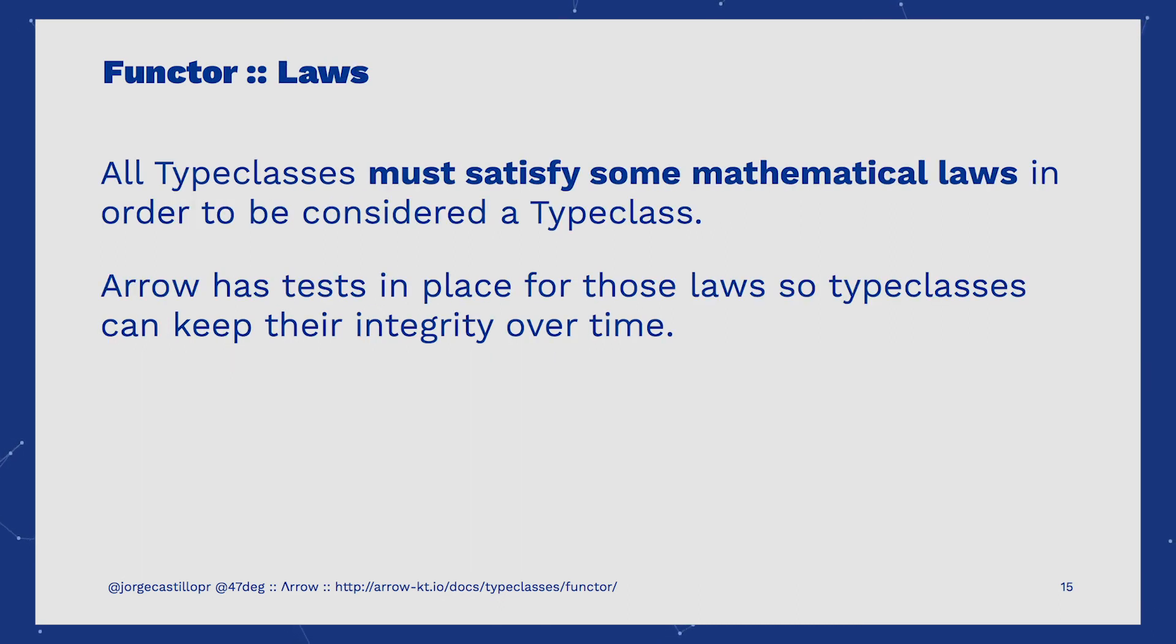Whenever we think about type classes, we assume they need to satisfy some mathematical laws in order to be considered a type class. Those laws are coded and enforced by tests inside Arrow, so we can ensure type classes' integrity over time. Some laws could be identity, associativity, composition and so on.